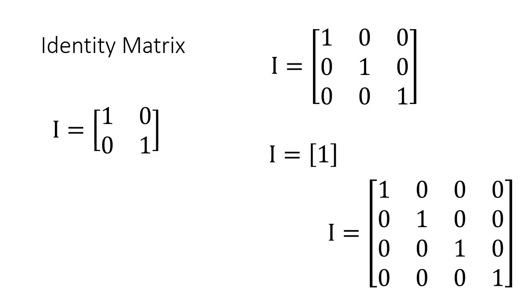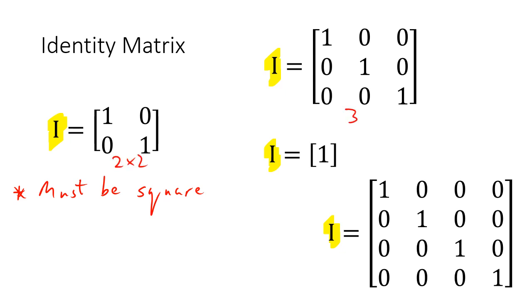Identity and permutation matrices. Things to know about the identity matrix: it's normally called I and it comes in different sizes but only one shape, and that shape is a square — so it must be square. We've got a 2×2, a 3×3, a 1×1, and a 4×4. With the 1×1, it is just 1, and that's an important thing to note.